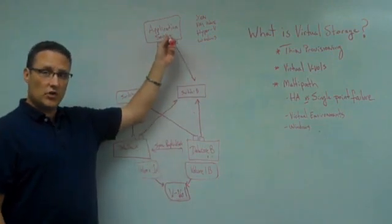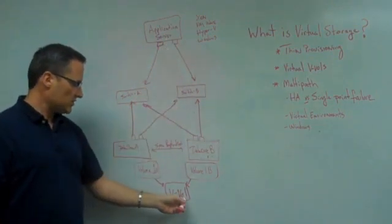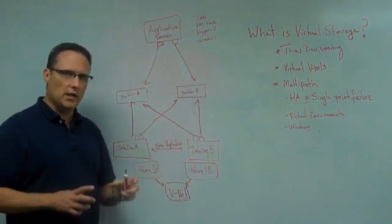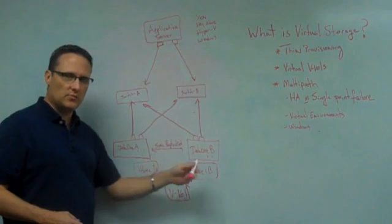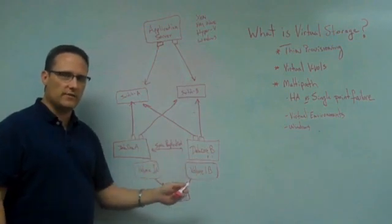So when your application server is looking for storage, it's actually looking at this. It sees one storage repository and it has no idea that there's multiple SAN nodes behind it that's serving up that data.